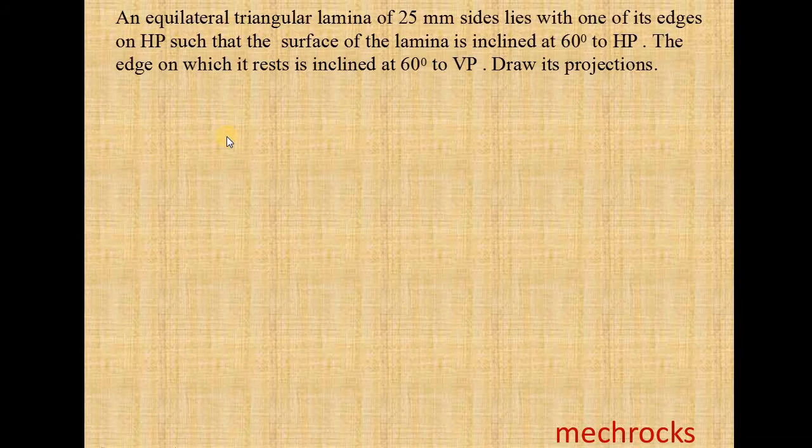We take one example. An equilateral triangular lamina of 25mm sides lies with one of its edges on HP such that the surface of the lamina is inclined at 60 degrees to HP. The edge on which it rests is inclined at 60 degrees to VP. Draw its projections.